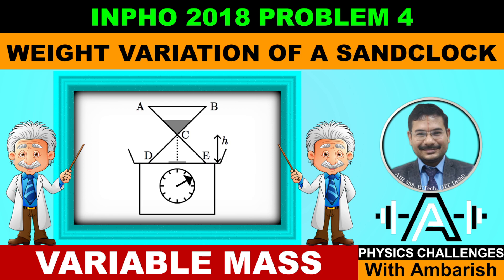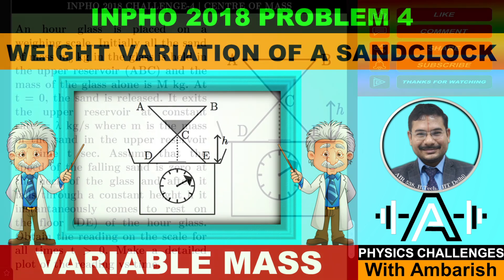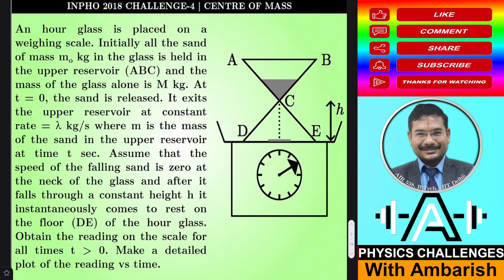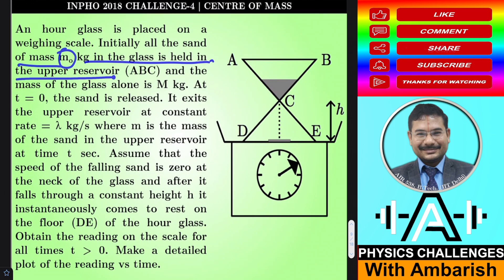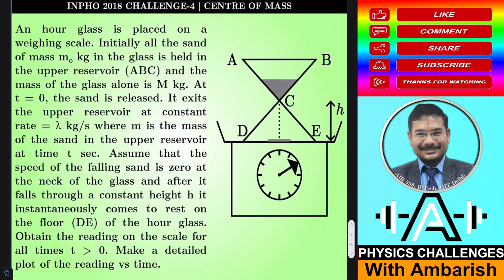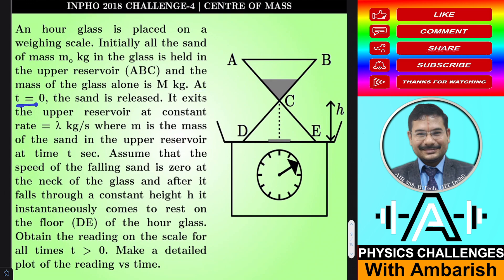This is INPHO 2018 Problem 4. An hourglass is placed on a weighing scale. Initially, all the sand of mass m₀ kg in the glass is held in the upper reservoir ABC. The mass of the glass alone is M kg. At t = 0, the sand is released. It exits the upper reservoir at a constant rate λ kg per second — that is constant.